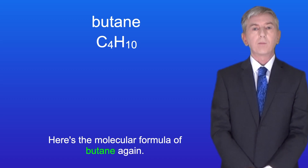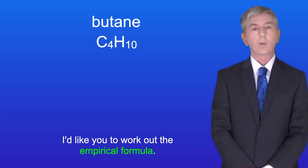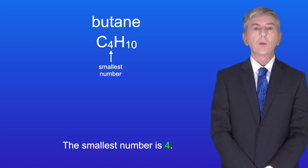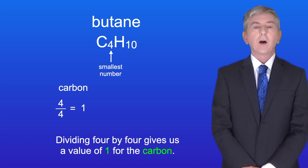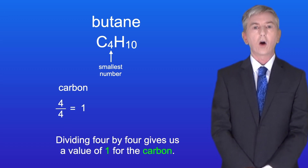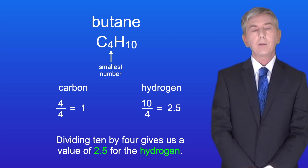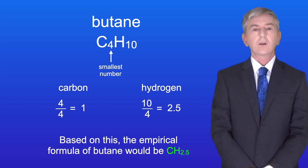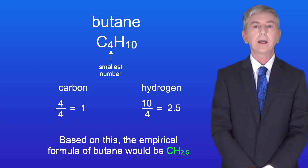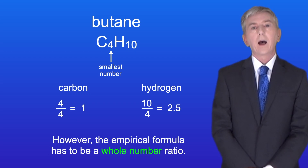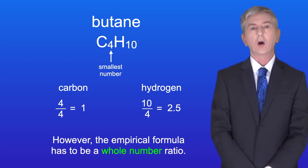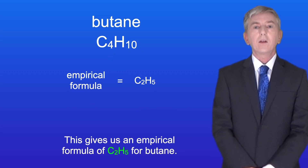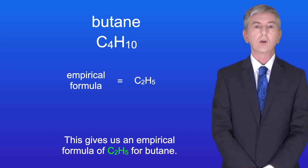Here's the molecular formula of butane again — C4H10. Try to work out the empirical formula yourself. The smallest number is 4. Dividing 4 by 4 gives us a value of 1 for the carbon. Dividing 10 by 4 gives us a value of 2.5 for the hydrogen. This would give CH2.5, but the empirical formula has to be a whole number ratio. So we multiply both numbers by 2, giving us an empirical formula of C2H5 for butane.